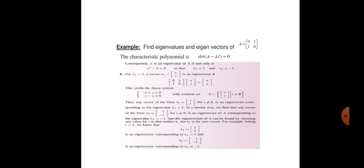Find the eigenvalues and eigenvectors of A equals [0, 1; 1, 0]. The characteristic polynomial gives lambda squared minus 1 equals zero, so lambda 1 equals 1 and lambda 2 equals minus 1. For lambda equals 1, the eigenvector v1 is [1, 1], and for lambda equals minus 1, the eigenvector v2 is [1, minus 1].